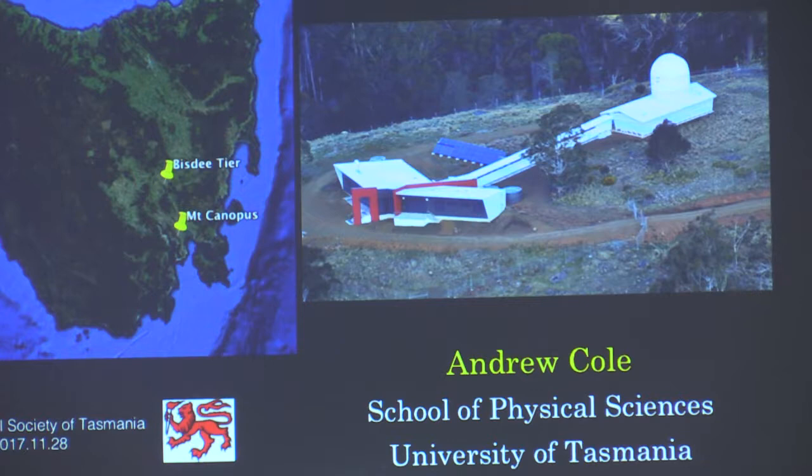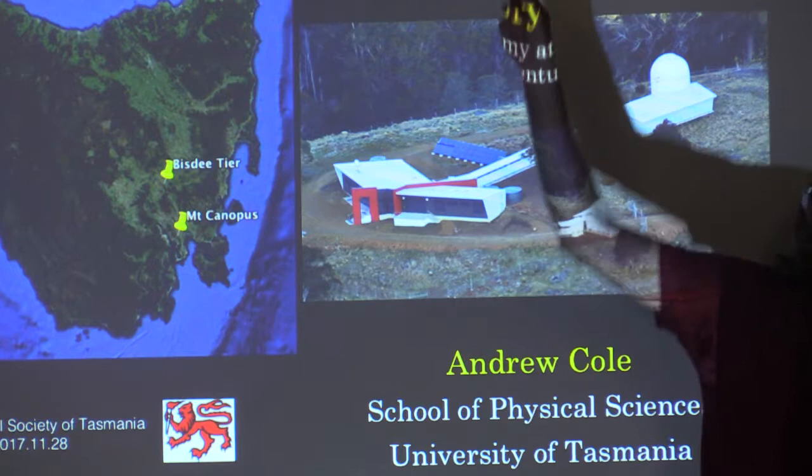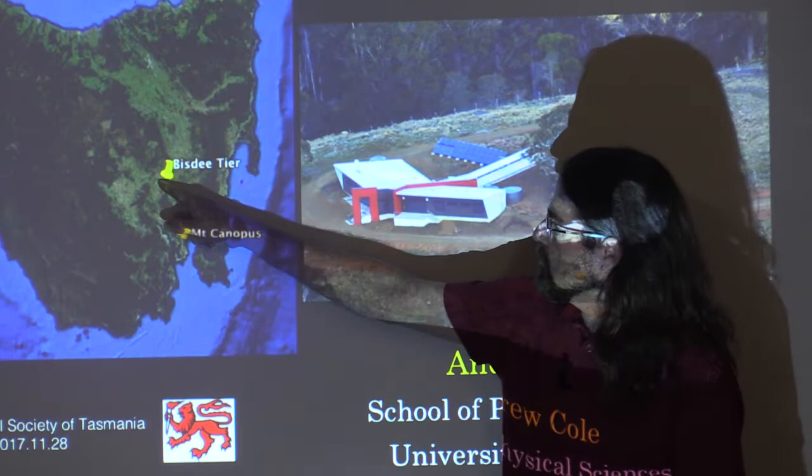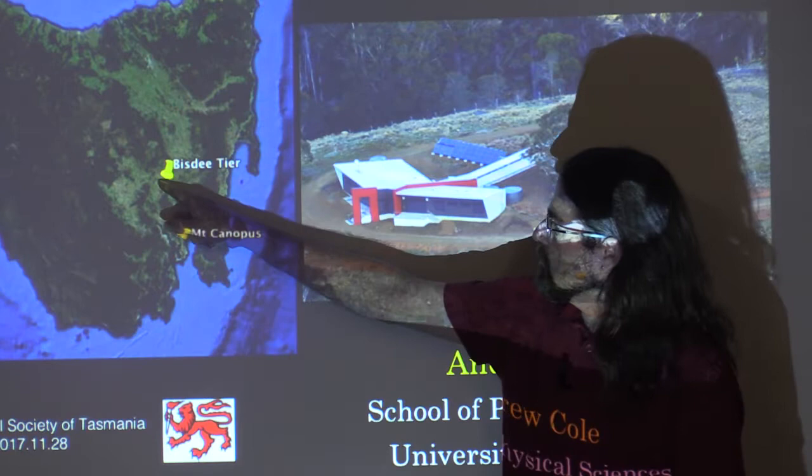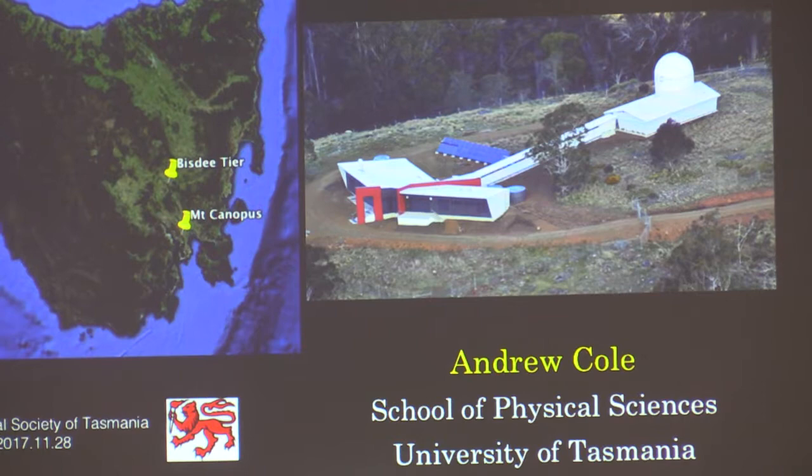Just to set the scene, the university's previous major optical telescope was a 40-inch, a 1-meter telescope, just up the hill that way, on Canopus Hill. And the new one is up here in the Midlands, just a bit off the highway. If you are coming from Launceston to Hobart on the Midland Highway, just after you pass Oatlands, if the light is correct and you're able to take your eyes off the road for just a minute, there's a point at which the road directly looks at our hill.